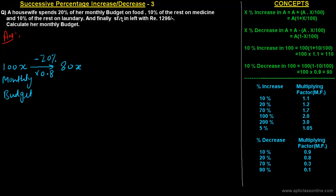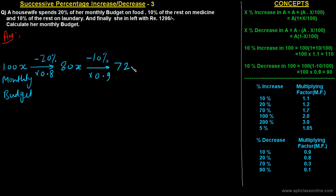Now she is left with 80x. Next, 10% is spent on medicine. We can get the amount she is left with by multiplying this amount with the suitable multiplying factor. For 10% decrease it is 0.9, so multiplying 80x by 0.9 gives the amount she is left with — that is 72x.